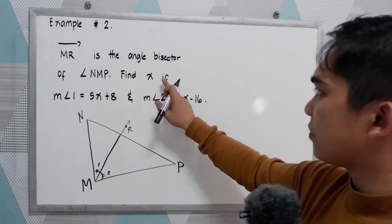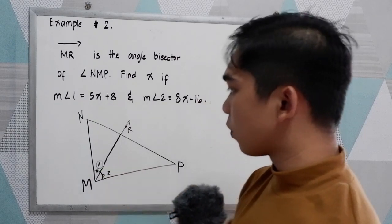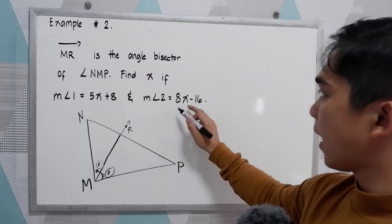Find X if measure angle 1 is 5X plus 8, this is our measure angle 1, and measure angle 2 is equal to 8X minus 16.